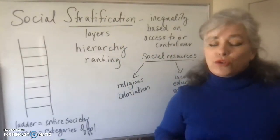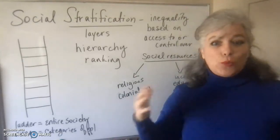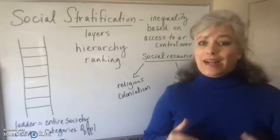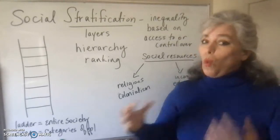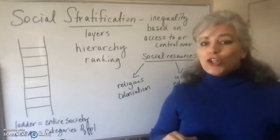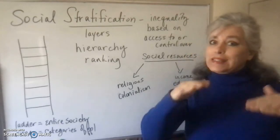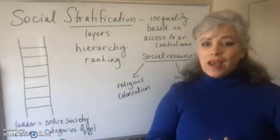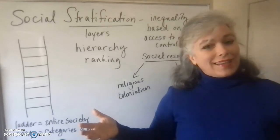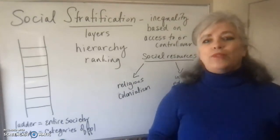Chapter seven is all about social stratification in general — explaining the background of it, explaining how societies work when social stratification is present, and also looking at social stratification in the United States. We're also going to look worldwide, which is what chapter eight does, and then we're going to use chapters nine and ten to look at some ascribed statuses that affect our position within the social stratification system, not just in the USA but worldwide too.